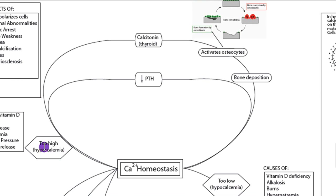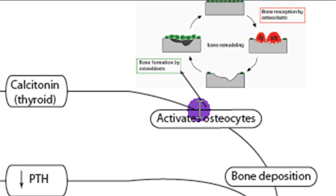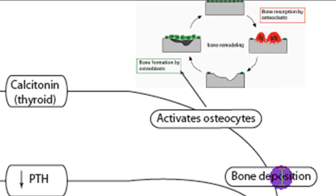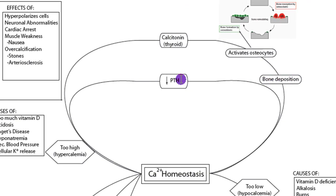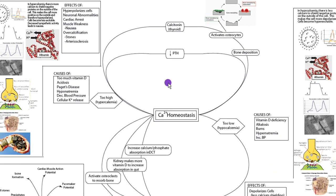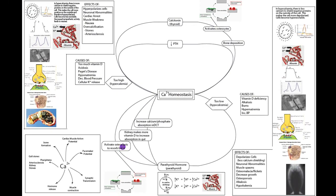If calcium gets too high, the thyroid releases calcitonin, and calcitonin stimulates the opposing cell — the osteocyte. The osteocyte will take that additional calcium and make bone, getting rid of it through bone deposition. Increased calcium will also inhibit parathyroid hormone, thereby inhibiting osteoclasts, inhibiting the production of vitamin D3 from the kidney, and inhibiting increased calcium absorption, so more calcium will actually be excreted.